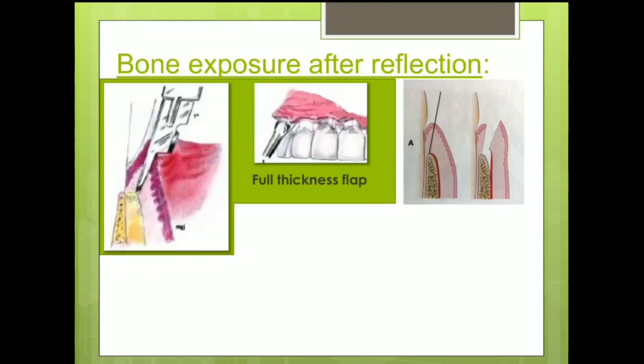In the first category, if we reflect the entire bulk of gingiva which is superficial to the bone, thereby exposing the bone, it is called a full thickness flap. To raise a full thickness flap, the scalpel should be oriented perpendicular or angulated towards the bone to hit it. Later, a blunt instrument like a periosteal elevator is used to reflect the gingiva including the periosteum from the bone surface.